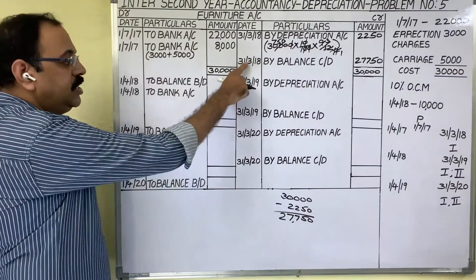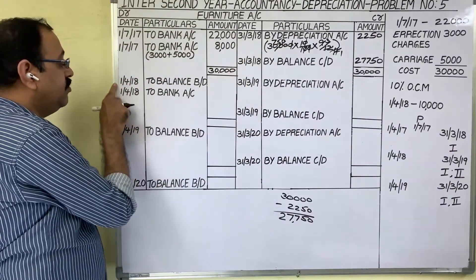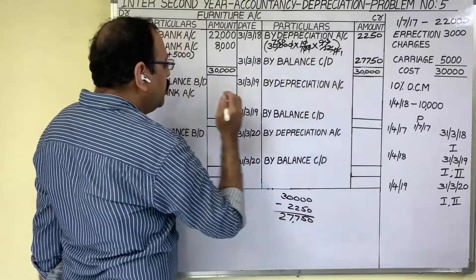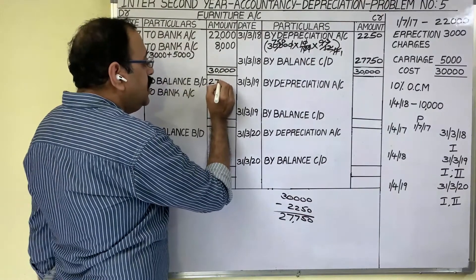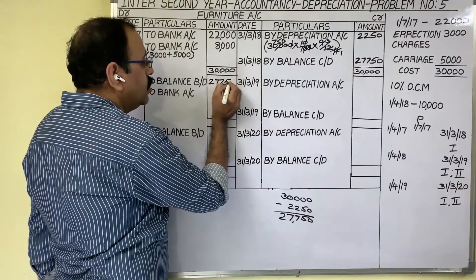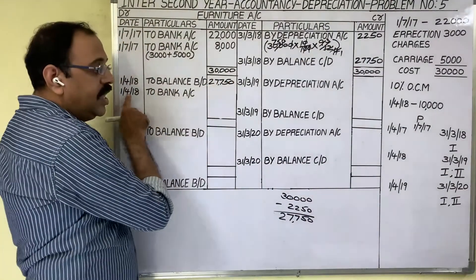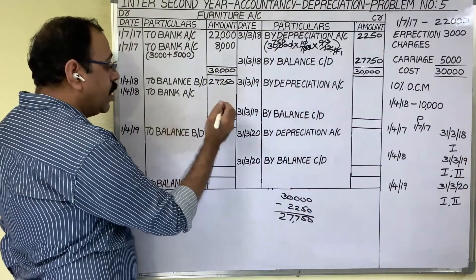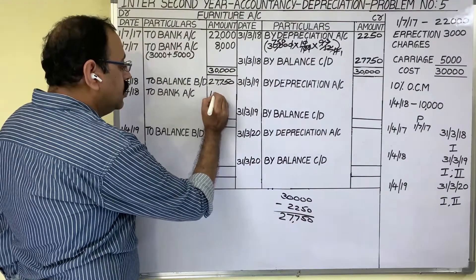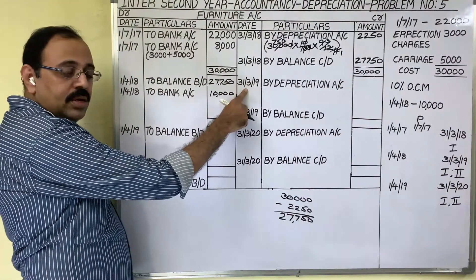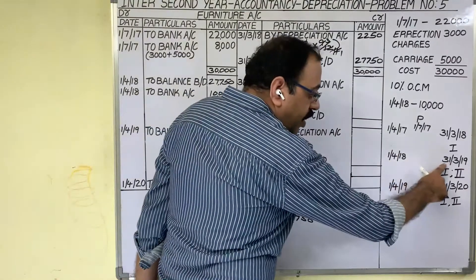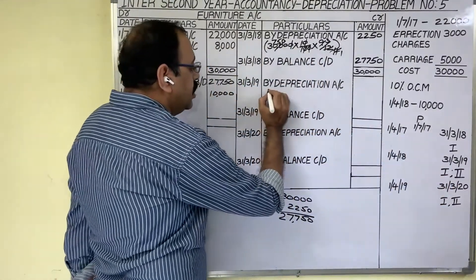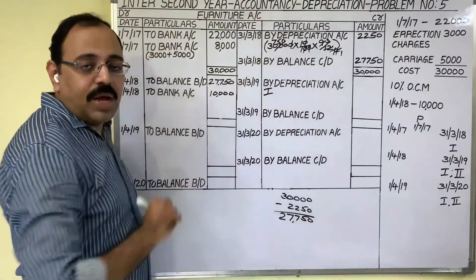Come to the second year. The next immediate date after 31st March 2018 is 1st April 2018 — write balance brought down of 27,750. On that day they purchased another asset for 10,000 rupees, so write 'To Bank Account 10,000.' The second year's last date is 31st March 2019; on that day we have two assets. First furniture is used for 12 months.